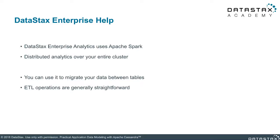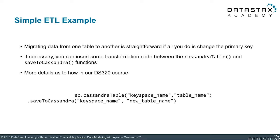If it's just the primary key being changed, migrating your data may be as simple as extracting and loading using the Cassandra table and save to Cassandra functions in Spark. All you need to do is specify the old table name and the new table name in the appropriate functions. However, even if the table has changed significantly, Spark will enable you to transform the old data so that it matches how it needs to be loaded in the new table.